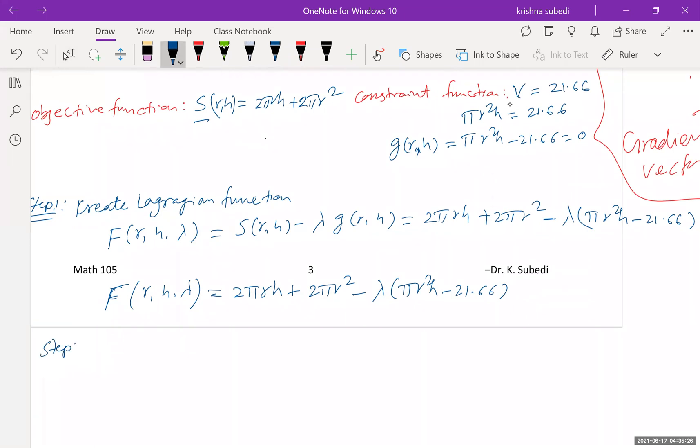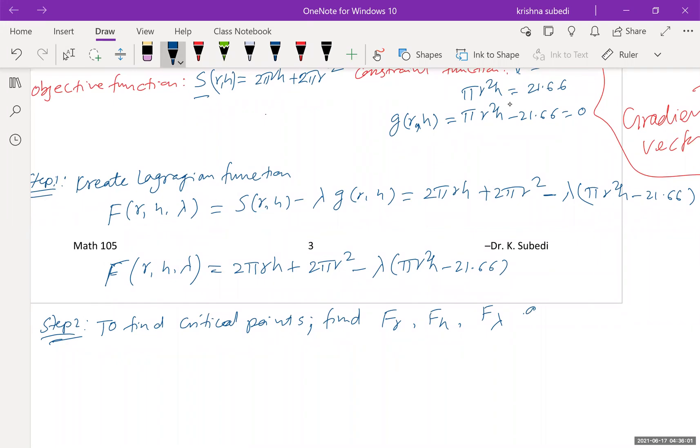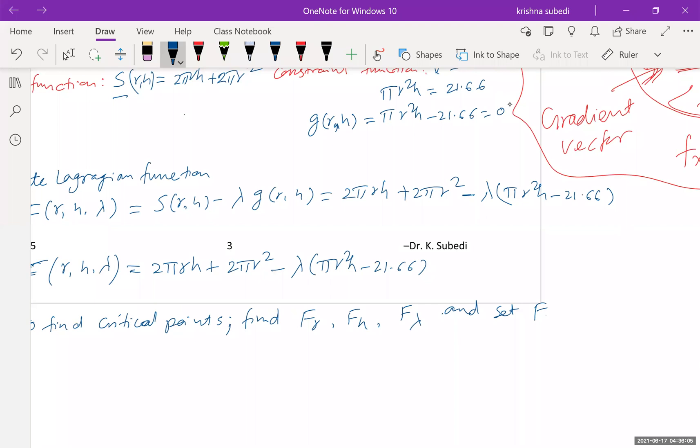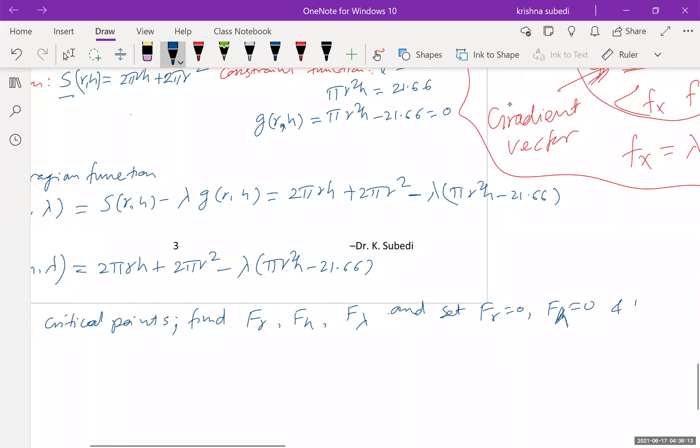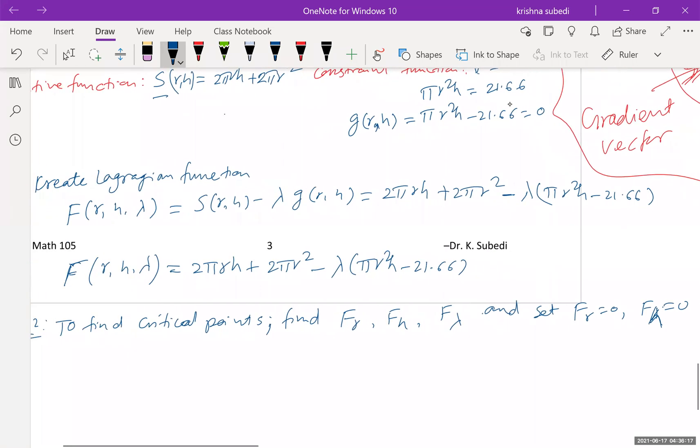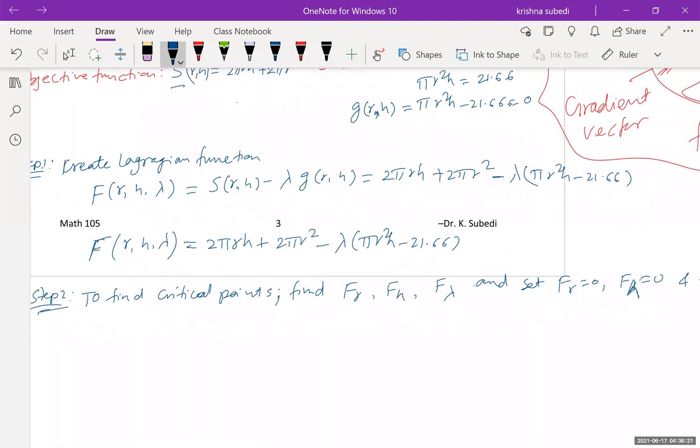Step two. I want you to find critical points. To find critical point, we know that F sub r equal to 0. Find F sub r, F sub h, and F sub lambda. Let us find that. And then set them equal to 0. We find the first order derivative, and then we set them equal to 0 to find the critical point.